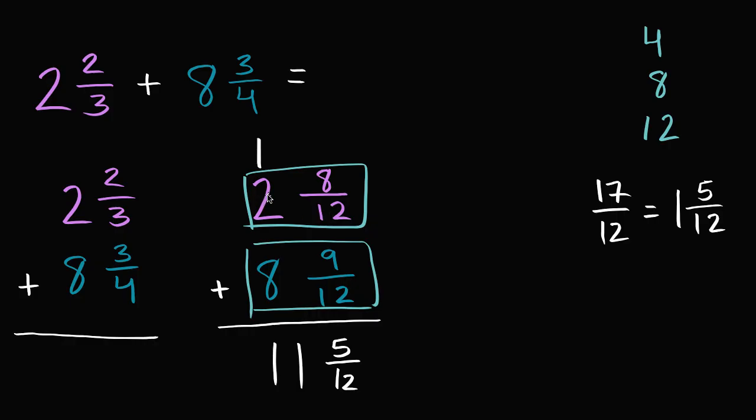So I could rewrite this top mixed number as thirty-two over twelve, clearly an improper fraction, and I could rewrite this bottom mixed number as, eight is how many twelfths? That's going to be ninety-six twelfths, plus another nine twelfths is a hundred-five twelfths.